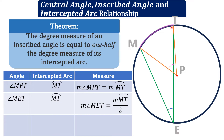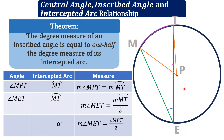We can also find the measure of angle MET based on the measure of angle MPT. Since they share the same arc, you can compute the measure of angle MET by using the measure of the central angle — that is, the measure of angle MPT divided by 2.